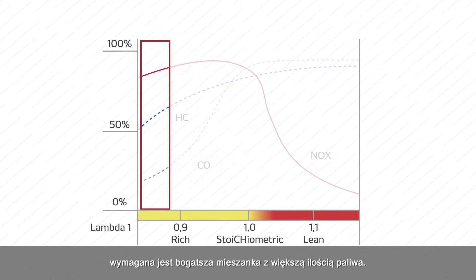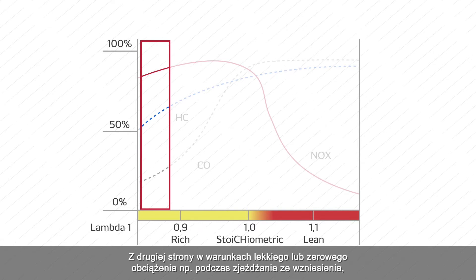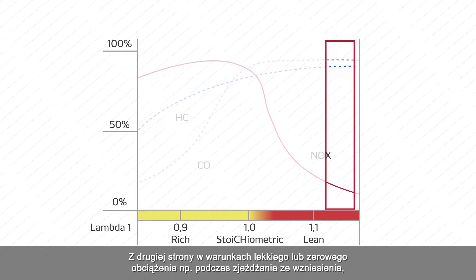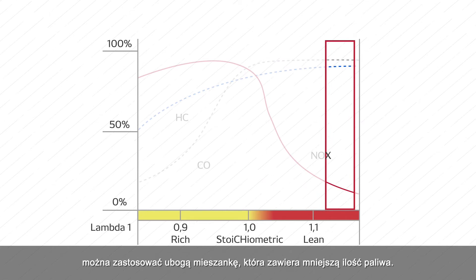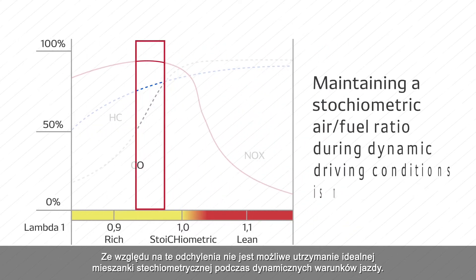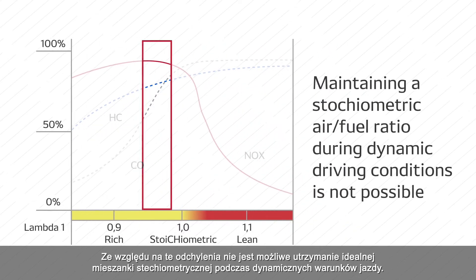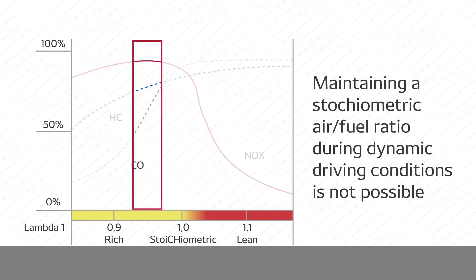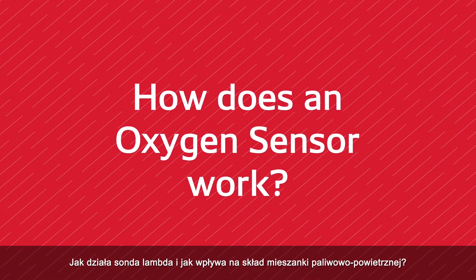A rich mixture has a slight excess of fuel. On the other hand, for light or zero load conditions such as coasting downhill, a lean mixture can be used, which contains very little fuel. Due to these variations, maintaining a stoichiometric air-fuel ratio during dynamic driving conditions is not possible.